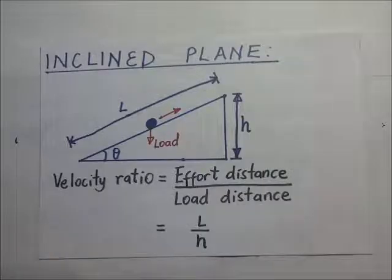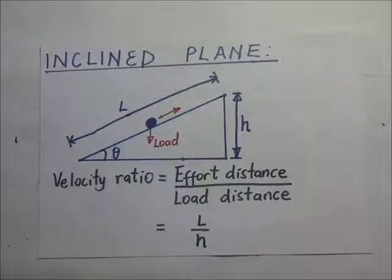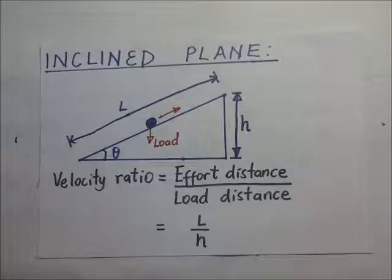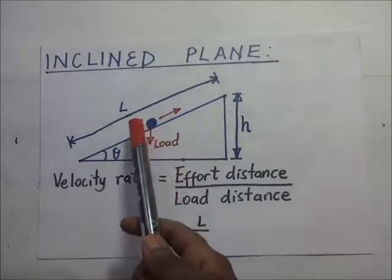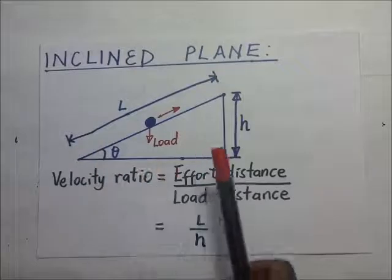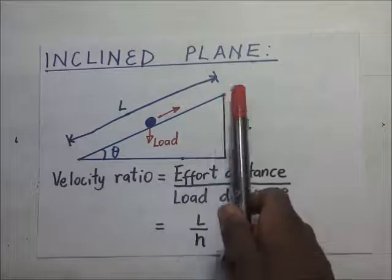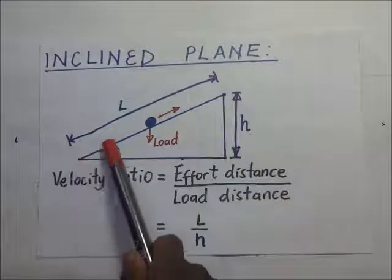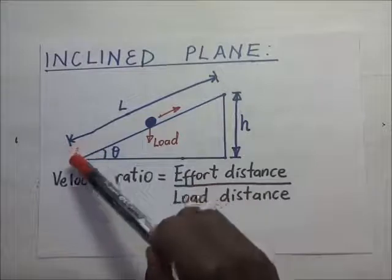An inclined plane is used to lift loads from the ground. It is more convenient to lift loads using an inclined plane because you lift loads more easily compared to lifting them vertically. If you have a load at a certain point, you can either lift it directly up or use an inclined plane to roll it along to the height where you want it. Rolling it along the inclined plane is more convenient than lifting it vertically upwards.